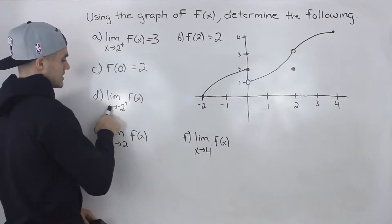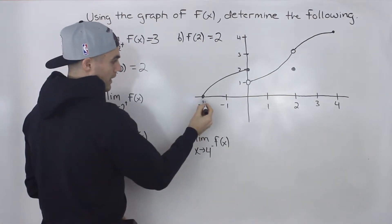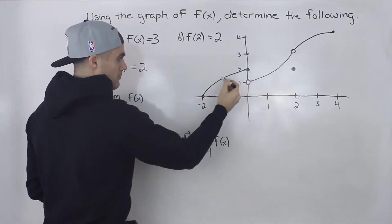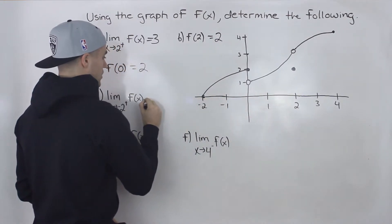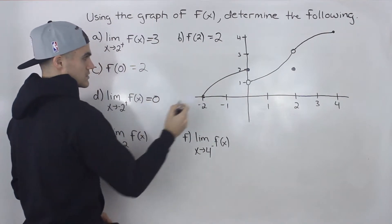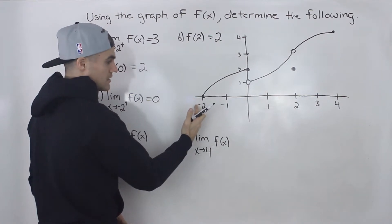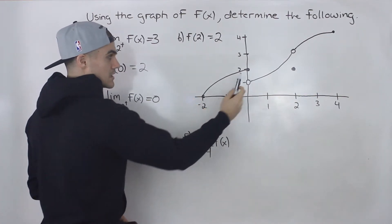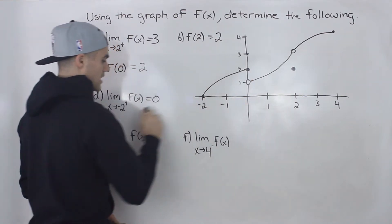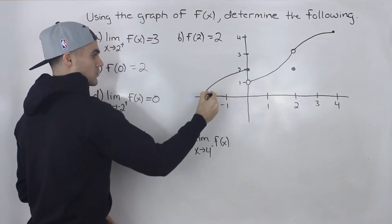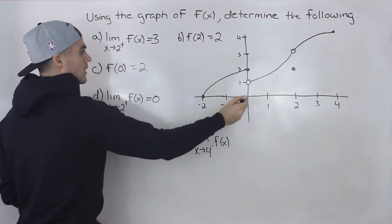The limit as x approaches negative two from the positive side of the function. As we approach negative two from the positive side, notice that the y value is approaching zero. We can't approach negative two from the negative side, so that limit doesn't exist. But we can approach this x value of negative two from the positive side, which is what they're asking for here. As we approach it from the positive side, the function approaches a y value of zero.